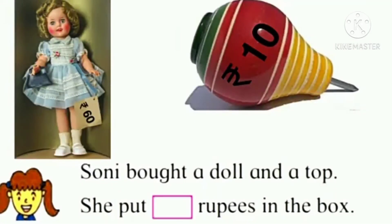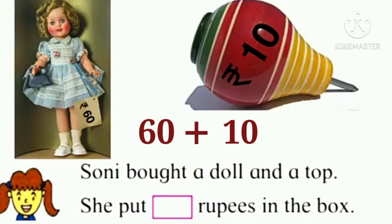Let's see one more example. Sony bought a doll and a top. The doll is for rupees 60 and the top is for 10 rupees. To calculate the total price, we will add rupees 60 and 10. So 60 plus 10 is equal to 70 rupees. It means Sony put 70 rupees in the box.